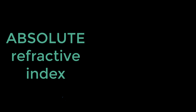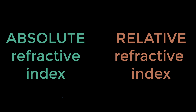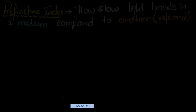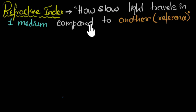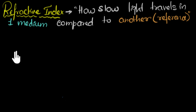In this video, I want to clarify the difference between absolute refractive index and relative refractive index. So let's start with just refractive index. I like to think of refractive index as a measure of how slow light travels in one medium compared to another medium, and we'll treat that second medium as a reference medium. So we'll take some examples, and then this statement will be super clear to us.